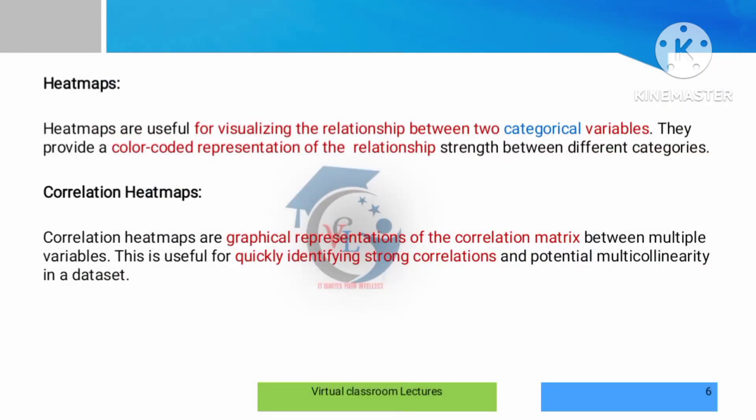Next is heat map. A heat map is a visualization for the relationship between two categorical variables. It shows the relationship between different categories using color codes to make differences easier to see. Correlation heat maps are also used to present correlations between other variables.